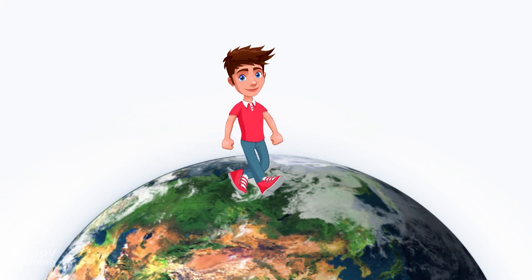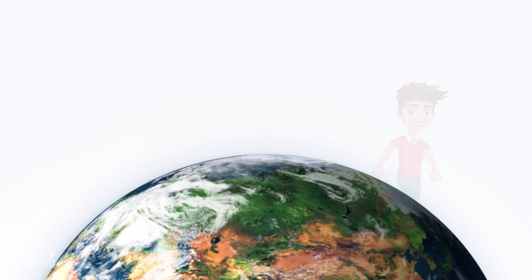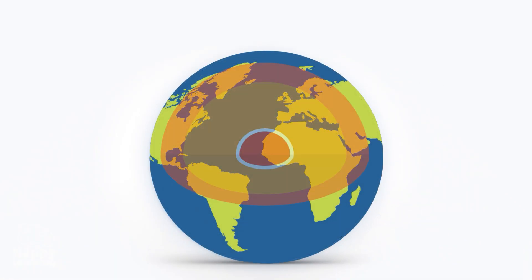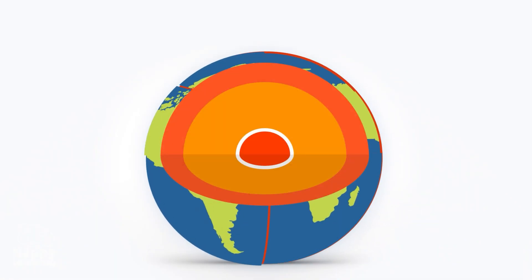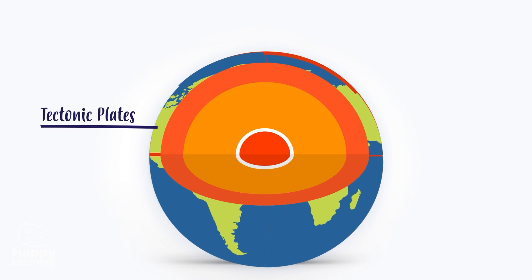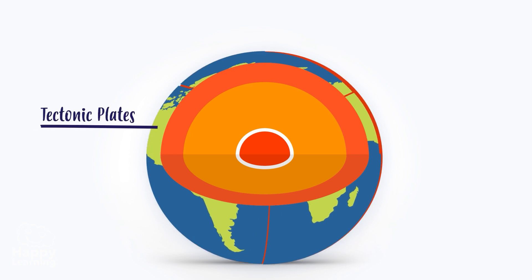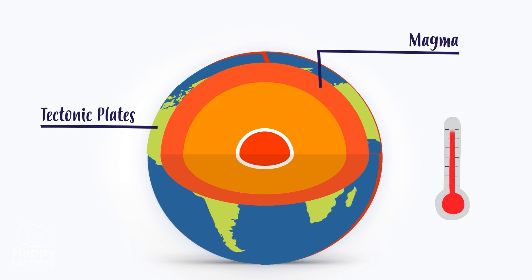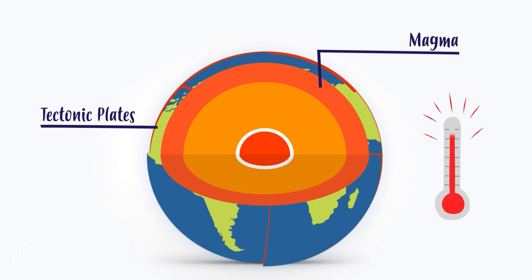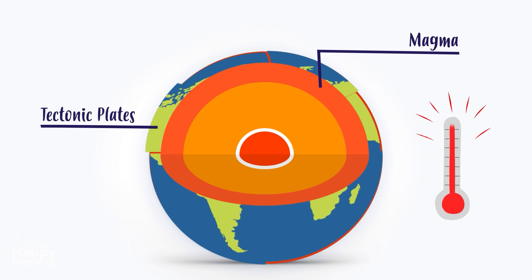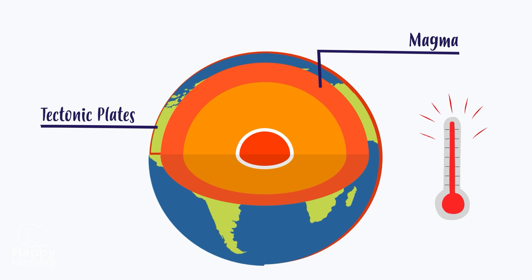Did you know that the floor we walk on lies over gigantic rocky plates that look like a jigsaw puzzle and are called tectonic plates? These plates float over magma, an extremely hot material that is found in liquid or viscous form because of its tremendously hot temperature.